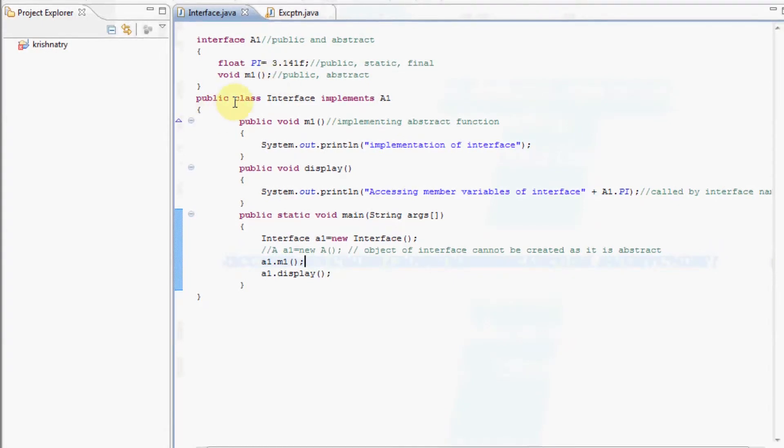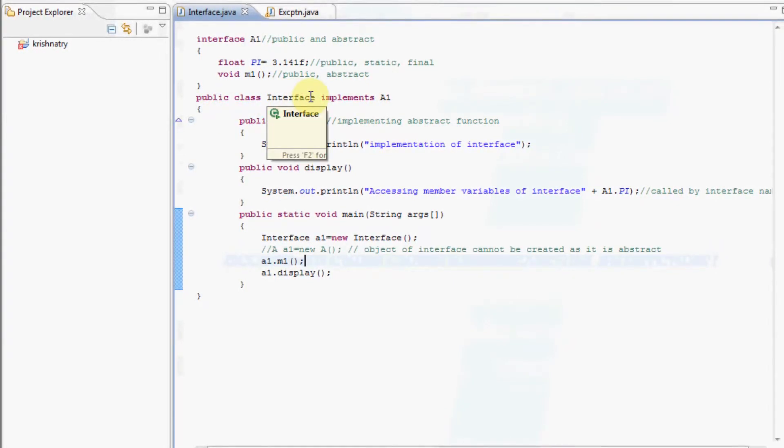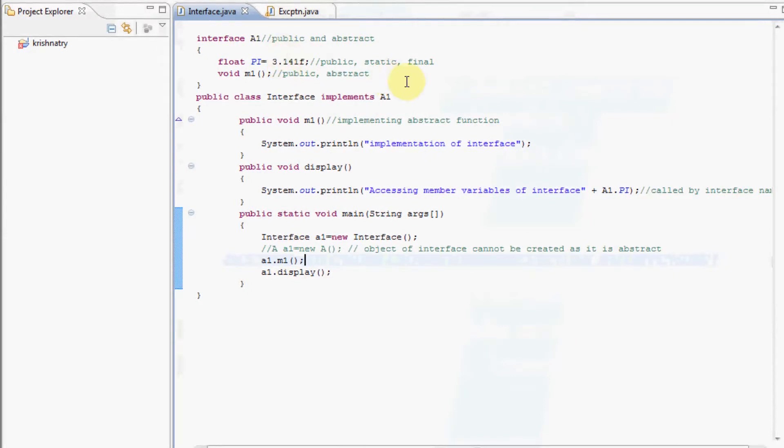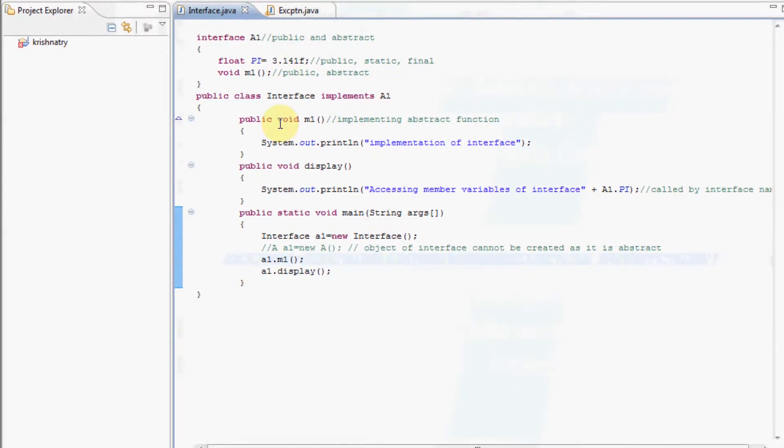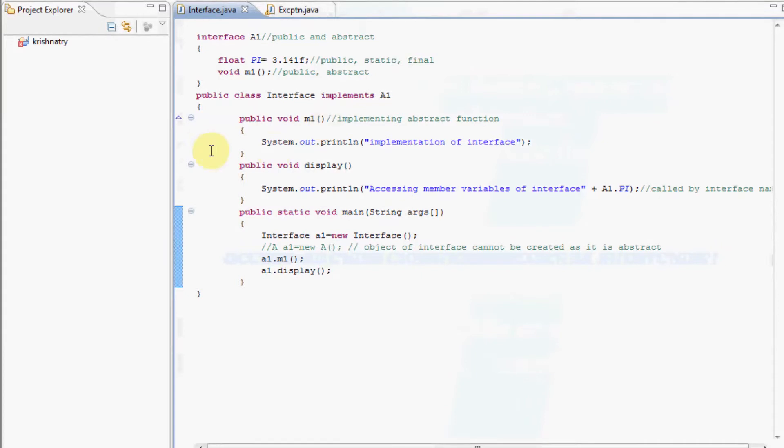Now we have a class named interface which is implementing the interface a1. We have defined the body of m1 in this class.